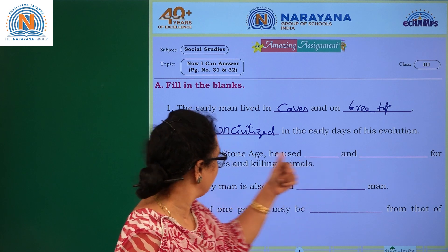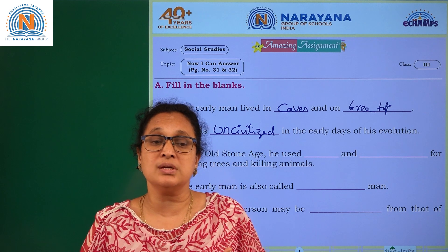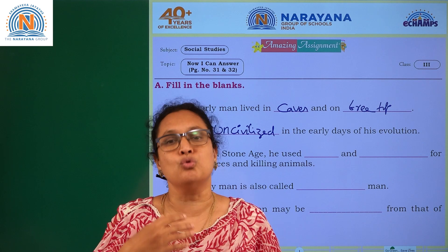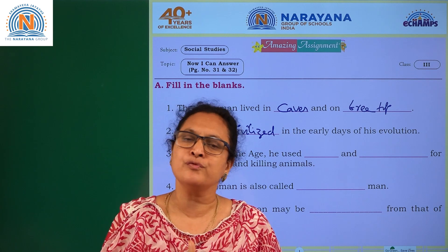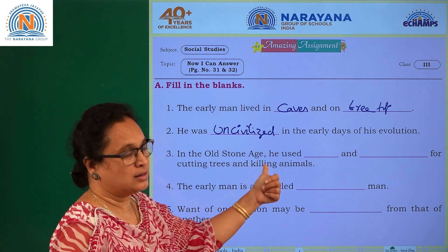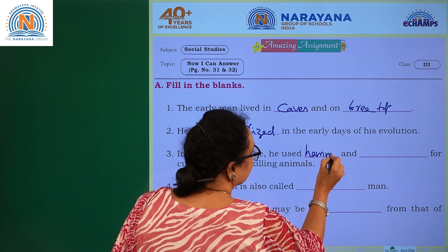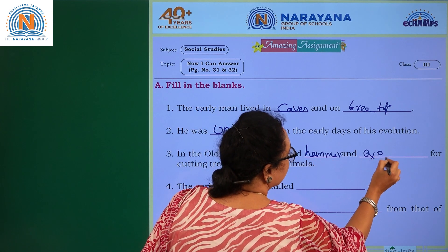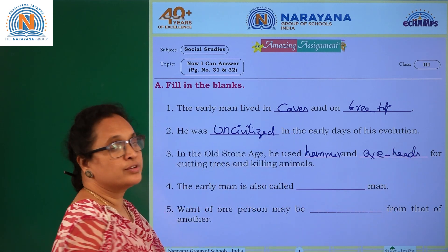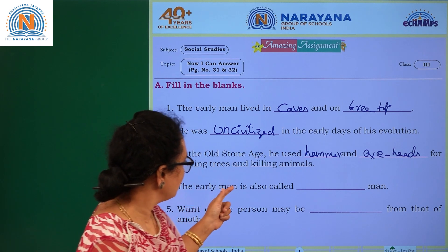Coming to the next one: in the old stone age, he used dash and dash for cutting trees and killing animals. Early man started using hammer and axe heads. The axe head is made of stone, not metal. So in the old stone age, early man used hammer and axe heads for cutting trees and killing animals.